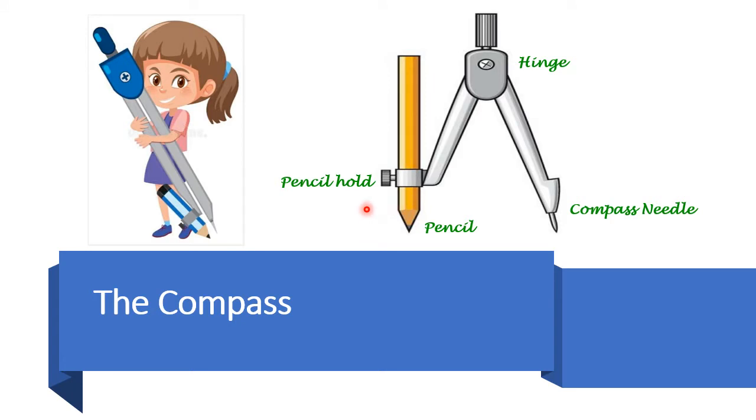The second arm has a grip for holding pencil and is called pencil hold. We fix our pencil in the pencil hold such that the pencil and the needle align with each other. Now our compass is ready to use.